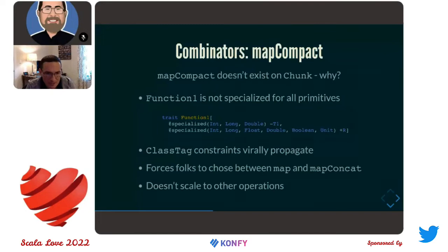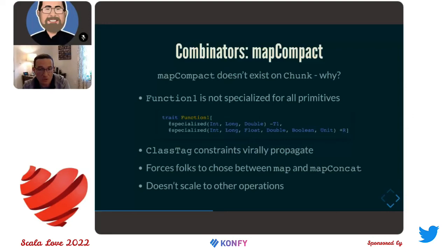The bigger argument is really the following. First, these ClassTag constraints — if we start adding them to the combinators in our library — will virally propagate up our call stack, all the way up to the point where we have a concrete type. So anything working with chunks in a parameterized fashion is going to end up picking up these ClassTag constraints. If you go and make a change like this and try to compile FS2, you'll see it just propagates everywhere.